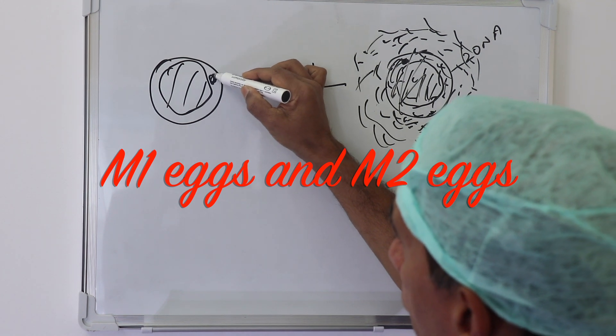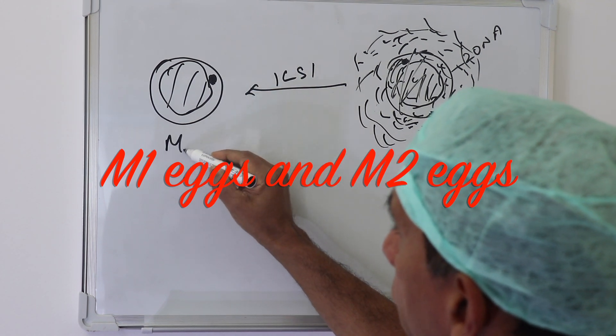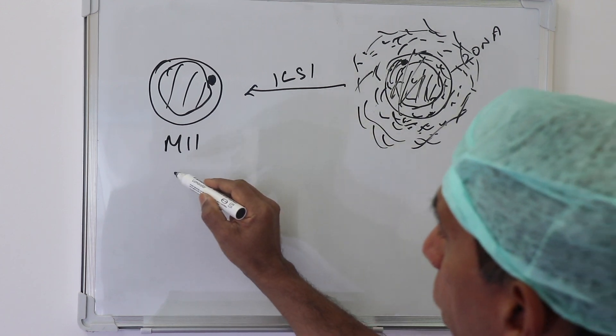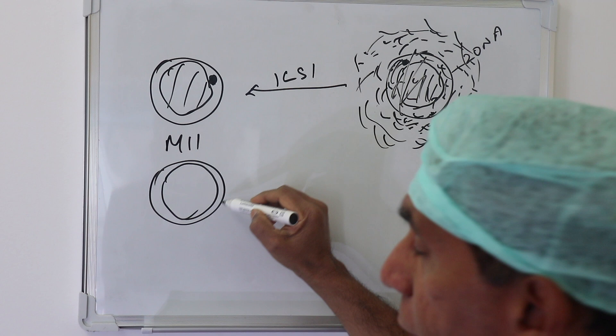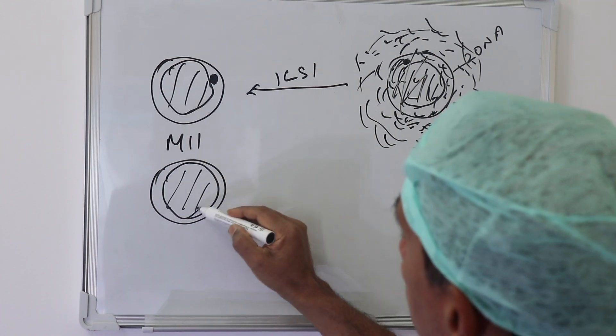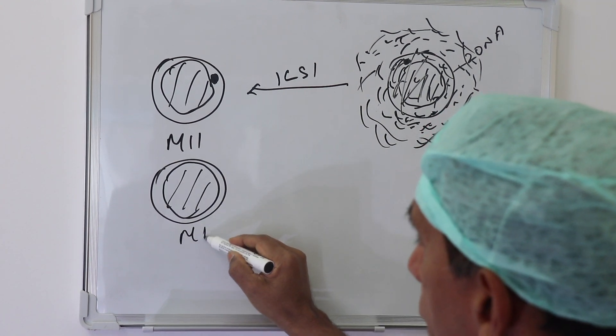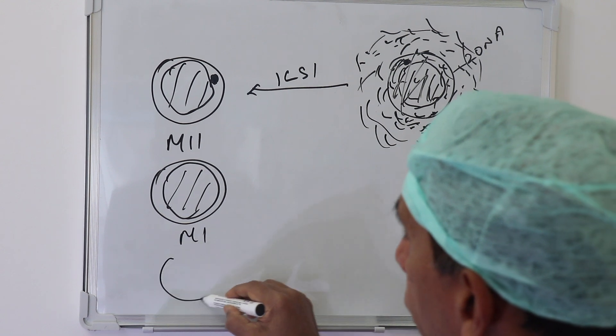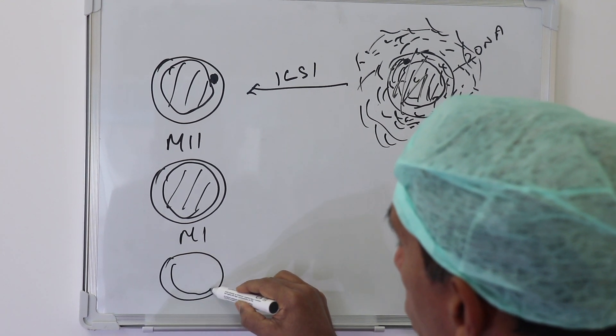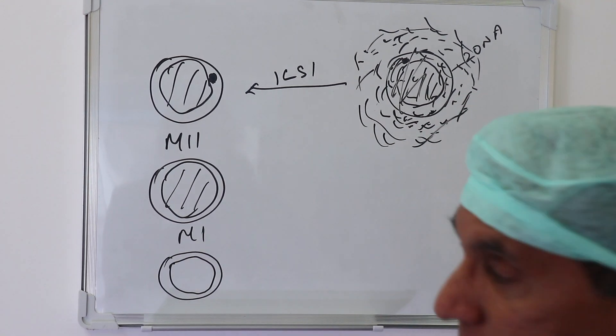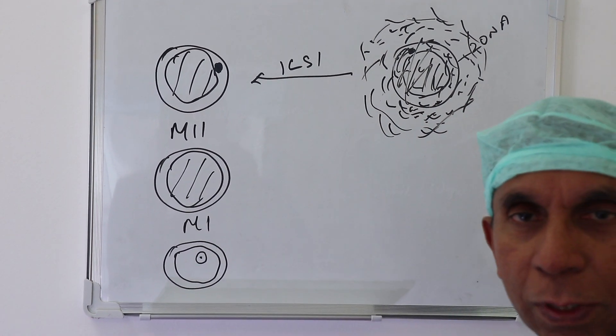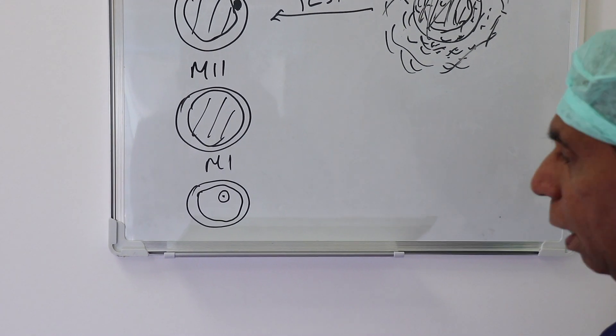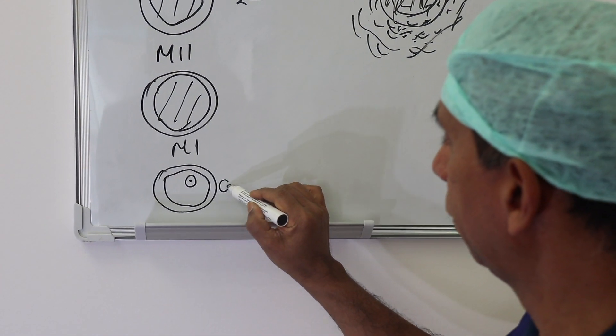If we see a polar body there, then we know it's a metaphase 2 egg. If we don't see the polar body and there is nothing in the subzonal space, then we know it's metaphase 1. And if we don't see anything in the subzonal space but there is a nucleus inside visible, that's a germinal vesicle, then we know it's a GV stage.